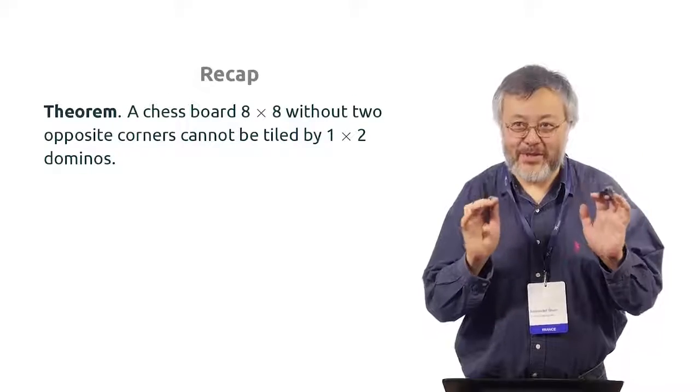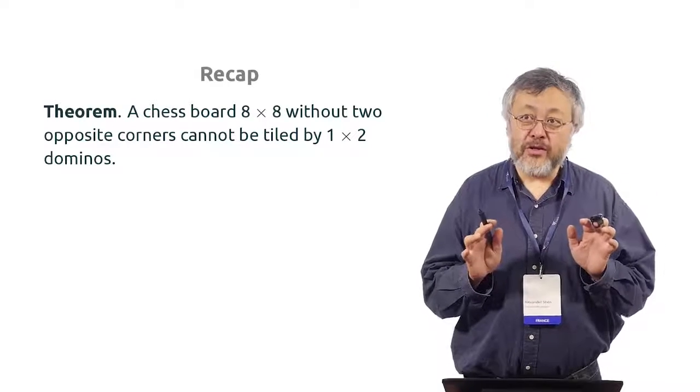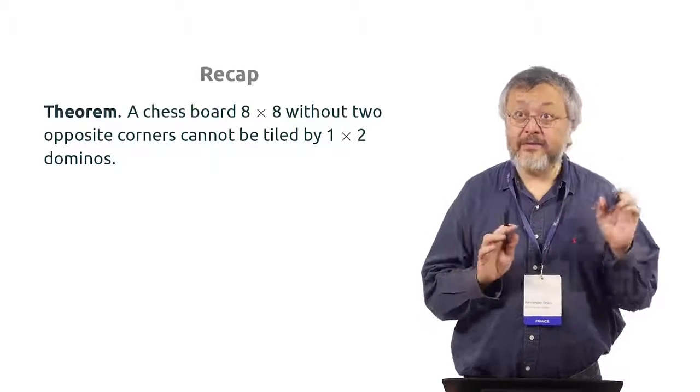So that we are serious mathematicians. So a theorem: A chessboard 8×8 without two opposite corners cannot be tiled by dominos 1×2. Why? The proof.